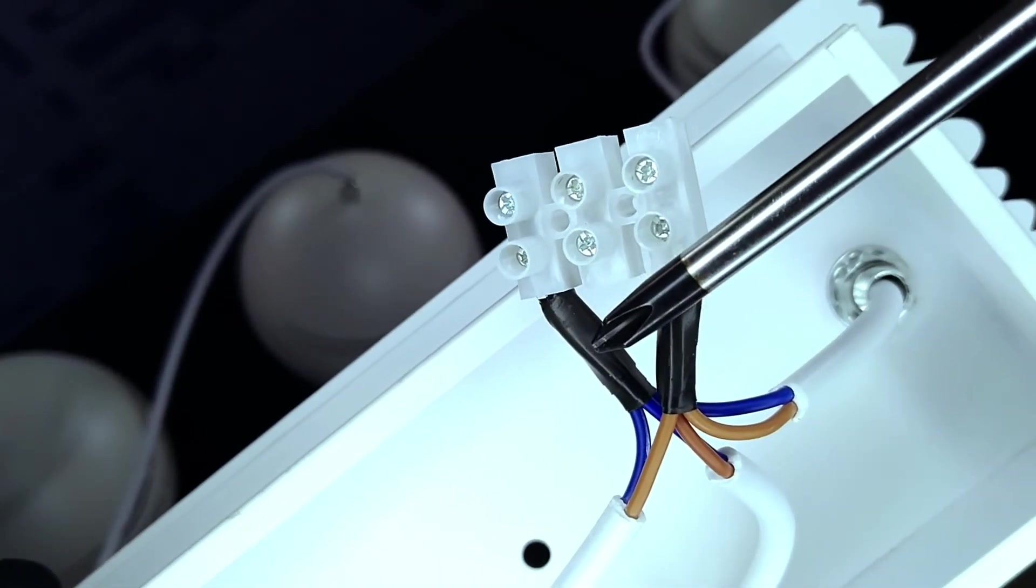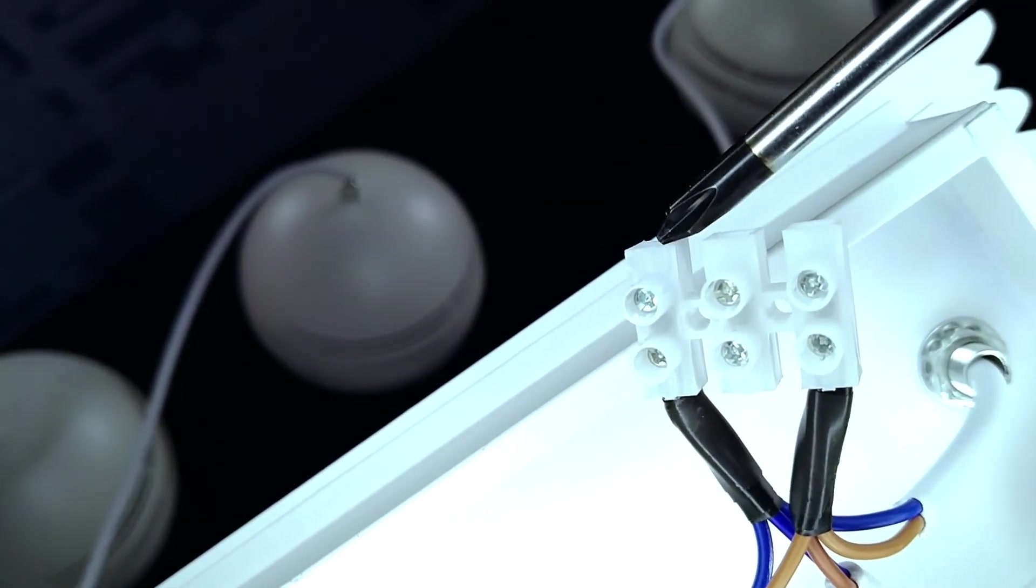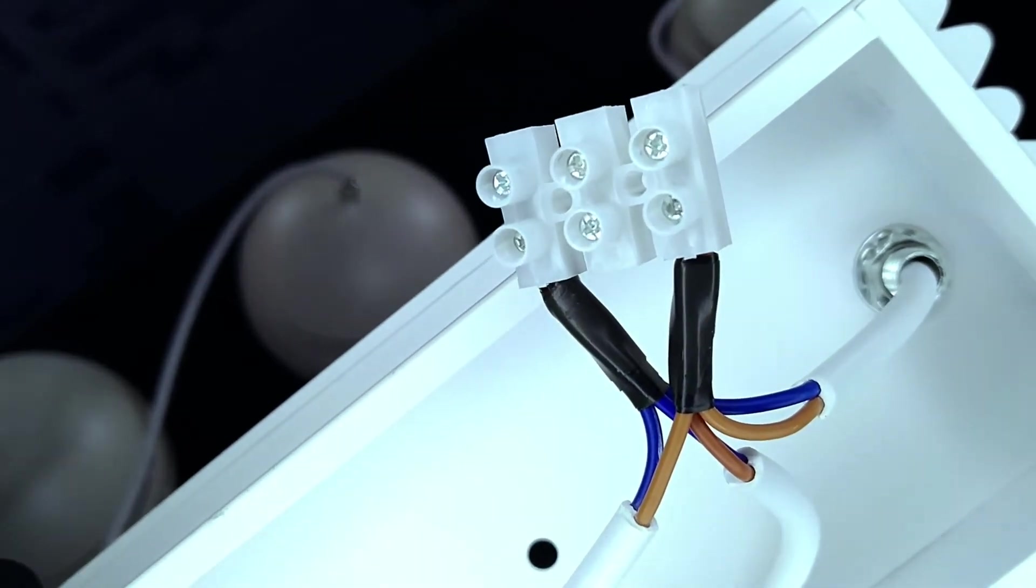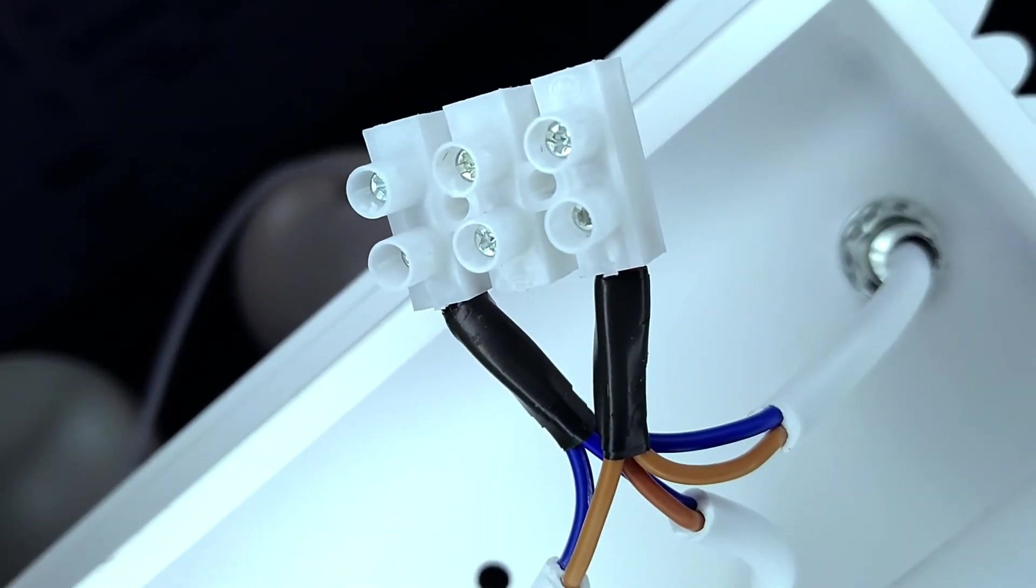By the way, it doesn't matter which wire from the ceiling goes to what terminals here. Unlike with batteries which use DC, there are no positive or negative wires or terminals when it comes to AC. The important thing is never to let the wires from the ceiling touch each other directly. All right, here we go.